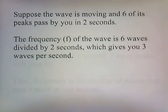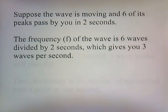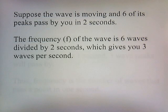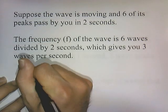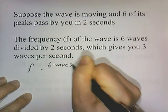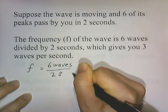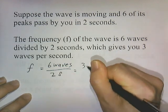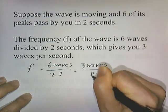Suppose our wave is moving and 6 of its peaks pass by us in 2 seconds. The frequency of the wave is 6 waves per 2 seconds, or 6 divided by 2 seconds, which gives us 3 waves per second. We use the letter F to describe frequency — so F equals 6 waves divided by 2 seconds, giving us 3 waves per second.